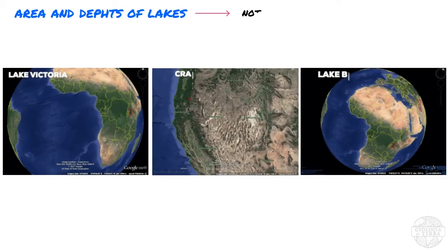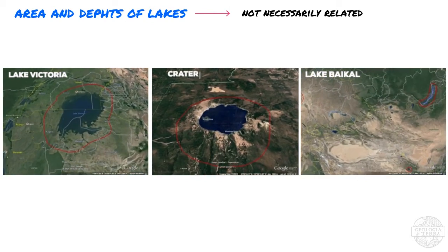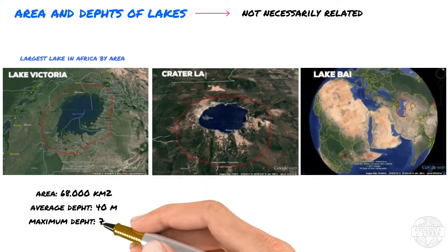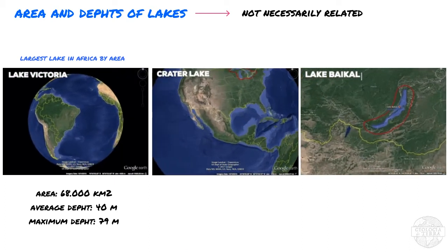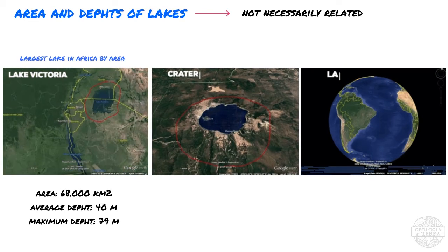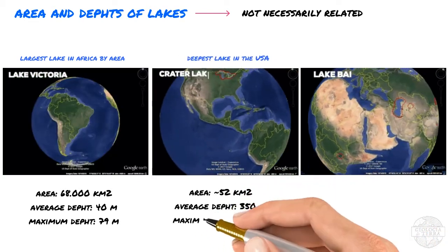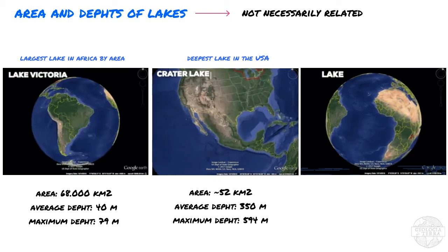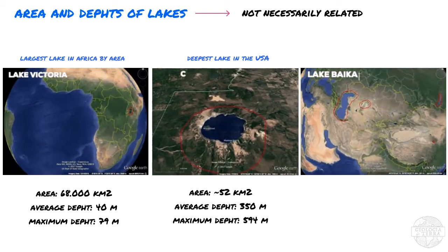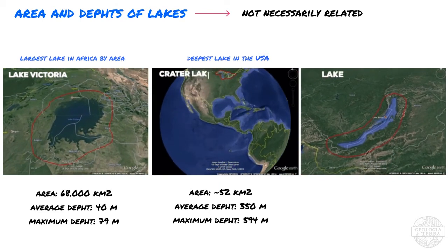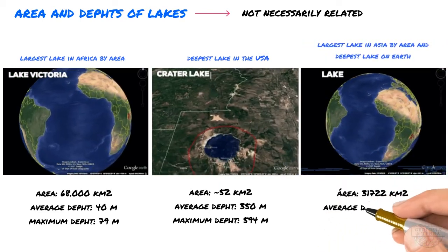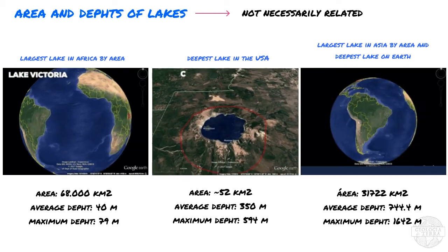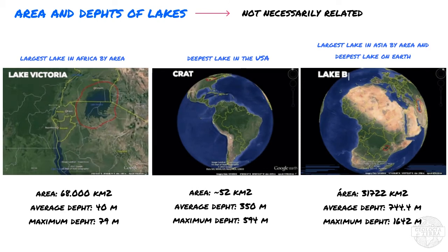What about water depths? Water depth and areal extent are not necessarily related — some of the largest lakes have very shallow depths and vice versa. For instance, Lake Victoria has a surface area of 68,000 km² but an average depth of only 40 meters. Crater Lake, which sits in a volcanic caldera in Oregon and is the deepest lake in the United States, has a surface area of about 52 km² and an average depth of 350 meters. Our winner for world's deepest lake is Lake Baikal in the Baikal Rift System in Siberia, with an average depth of 744.4 meters, a maximum depth of 1,642 meters, and a surface area of 31,722 km².